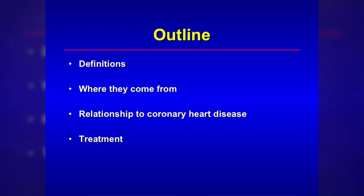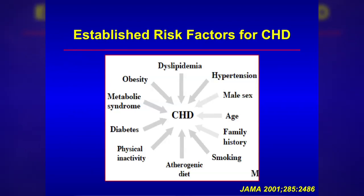Over the next 15 minutes or so, I'm going to define what cholesterol and triglycerides are, talk about where they come from, their important relationship to coronary heart disease, and how we can manage them. Cholesterol and triglycerides are a major risk factor for the development of coronary heart disease. There are a number of risk factors that have been defined, and at the very top, where it says dyslipidemia, this is talking about abnormalities in cholesterol and triglyceride concentrations in the bloodstream.